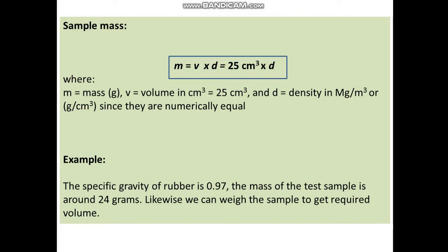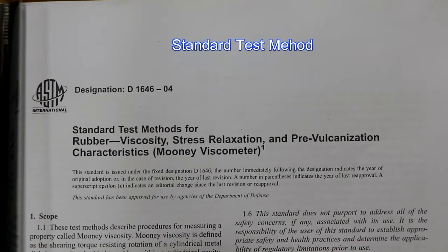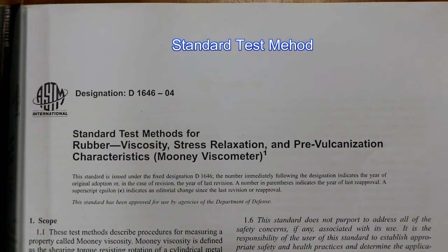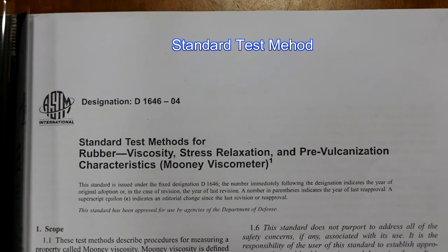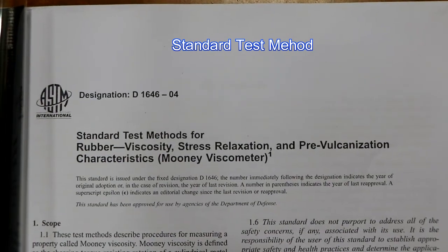The sample weight is calculated from the cavity volume of 25 cubic centimeters and the density of rubber, which is around 0.9799. Using this equation, if the volume is 25 and the specific gravity of rubber is 0.97, we need to take 24 grams of rubber sample for the test. The test method is ASTM D 1646-04.